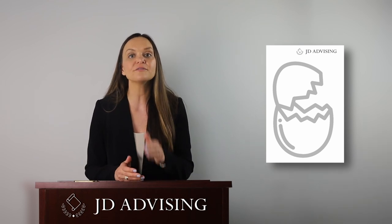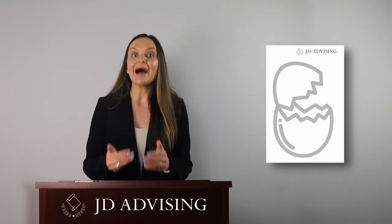The next issue is the eggshell skull rule. The law states that a defendant is liable for the plaintiff's uncommon and unforeseeable harm or reactions due to the defendant's negligence — in other words, the defendant takes the plaintiff as he finds him. So if a plaintiff has a disorder that makes their bones break easily, the defendant will be liable for that harm even if the defendant was not aware of the plaintiff's disorder.